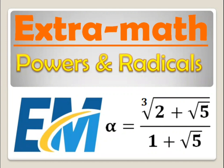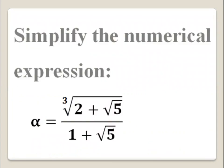Hello everyone, it's a new video from Extramat. Let us simplify the following numerical expression: alpha equals 2 times the cubic root of (2 plus square root of 5) all over (1 plus square root of 5).